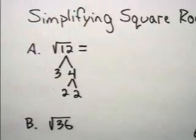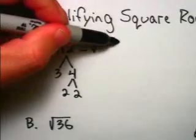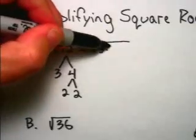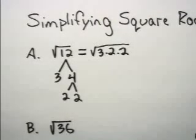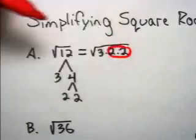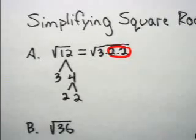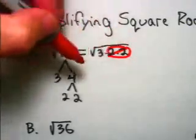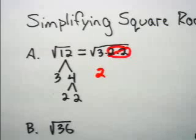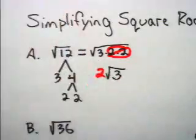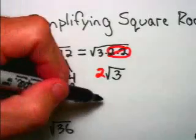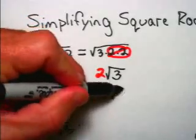That means that the square root of 12 can be written as the square root of 3 times 2 times 2. We know what the square root of 2 times 2 is — 2 times 2 is another way of writing 4, and the square root of 4 is 2. The square root of 3 is an irrational number, so we're going to leave it inside the square root sign. So the simplest radical form of the square root of 12 is 2 times the square root of 3.